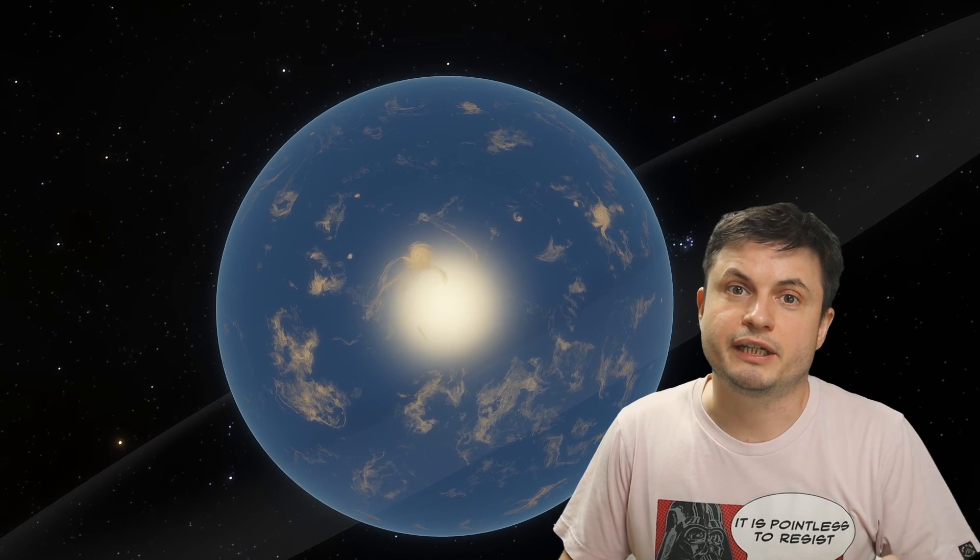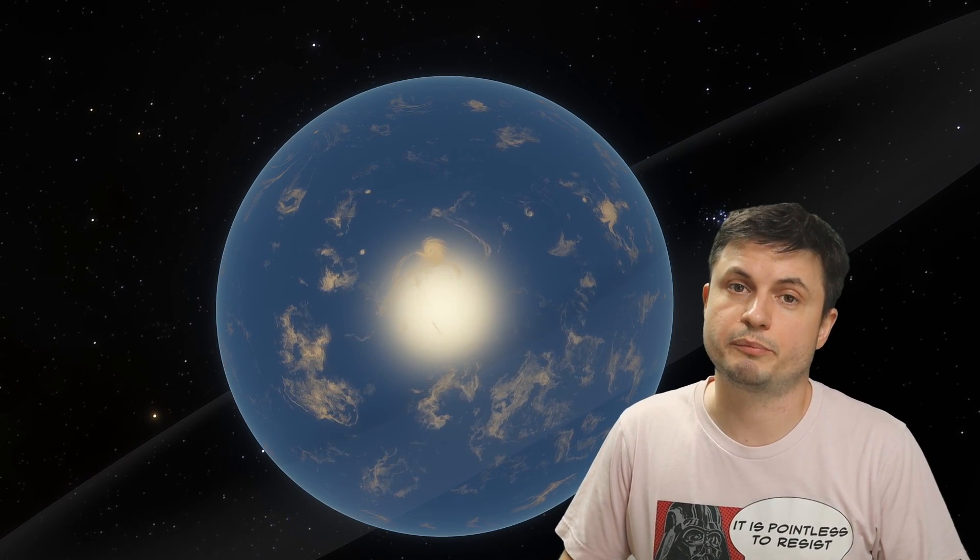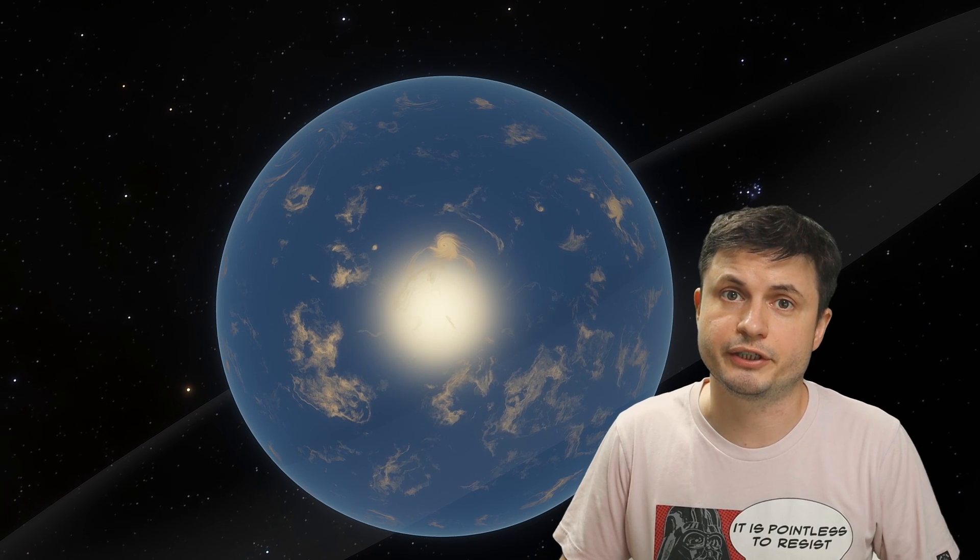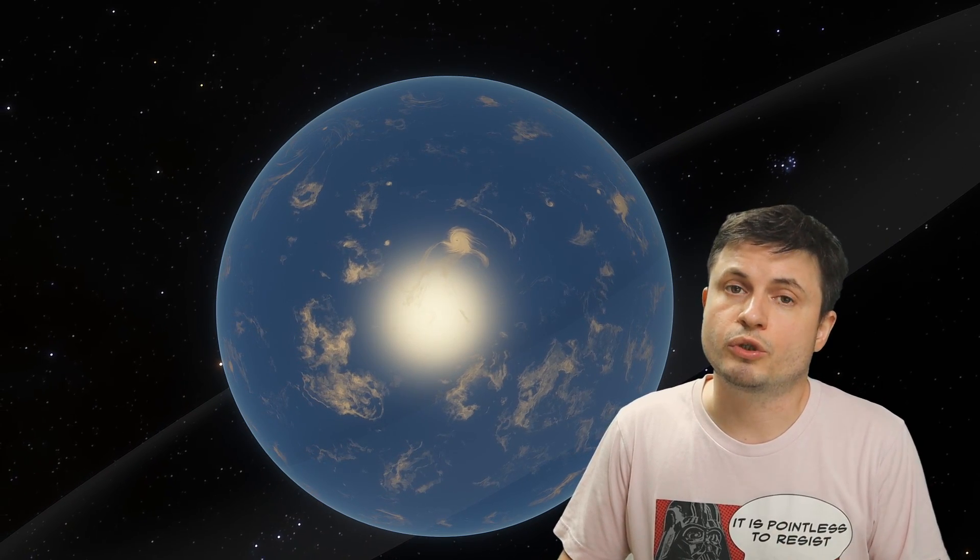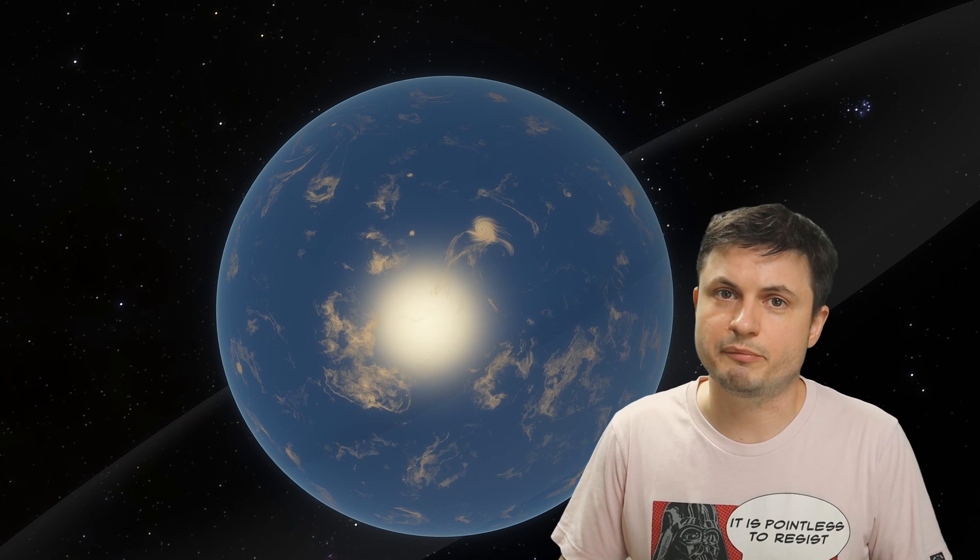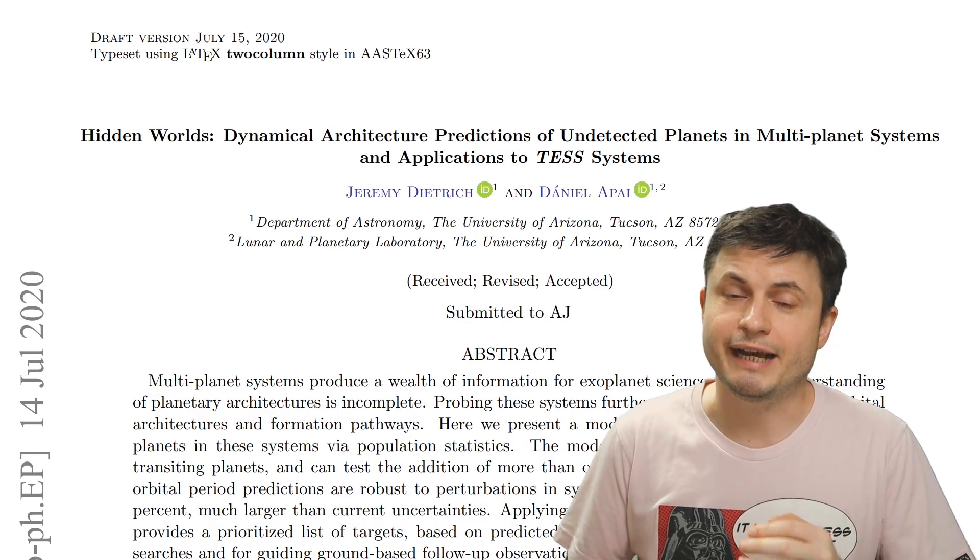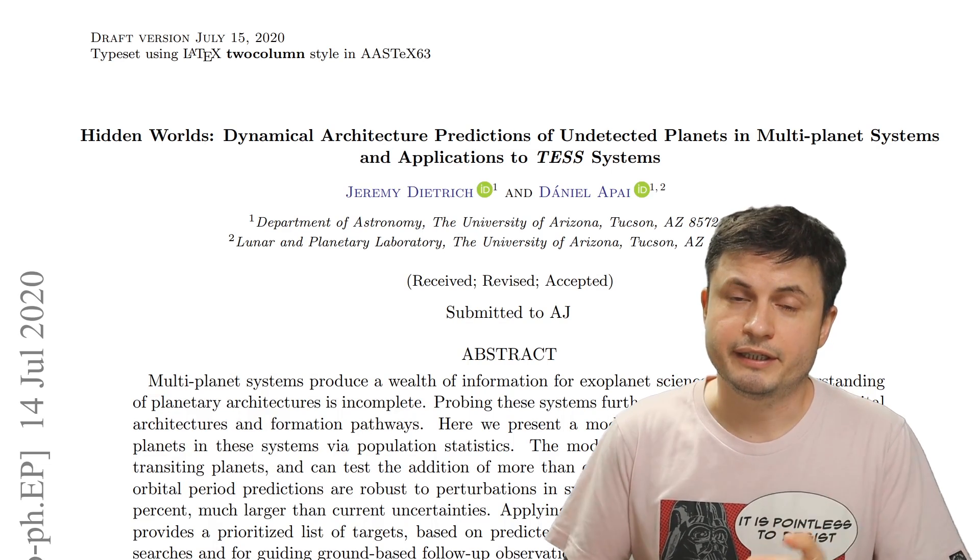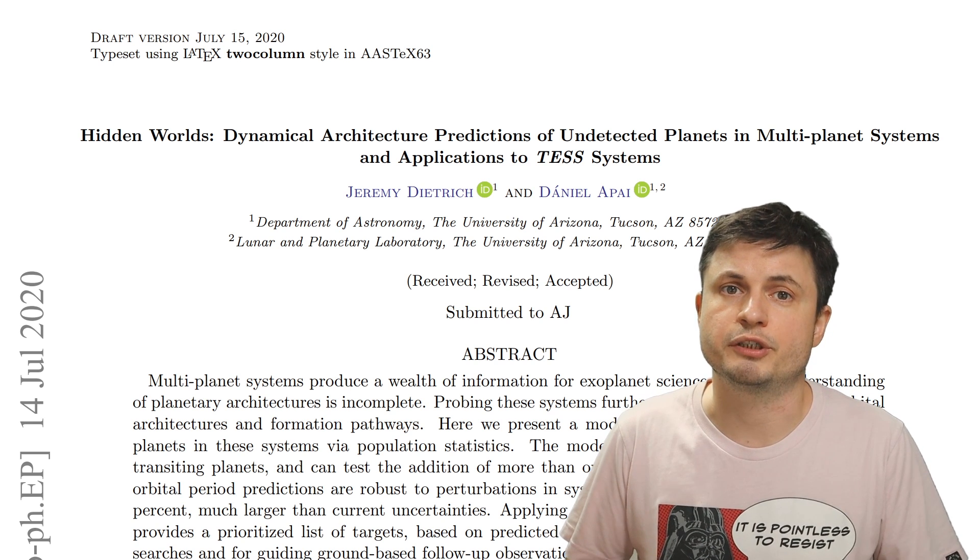Now in 2017, four of these planets were officially confirmed, so now we're pretty certain there's at least four planets here, but the other four were only recently identified, and this was actually using a completely new mathematical algorithm known as DYNAMITE for short, the study about which you can find in the description below.